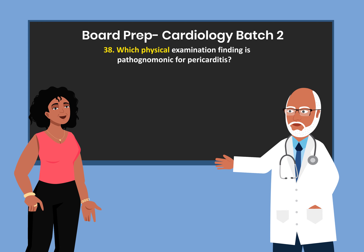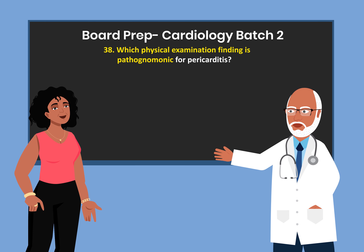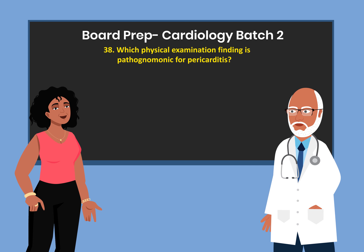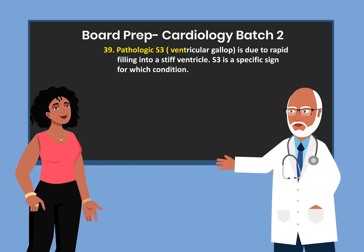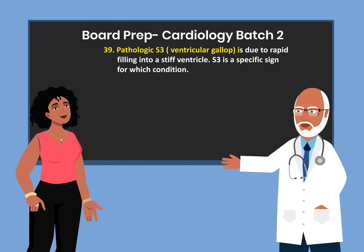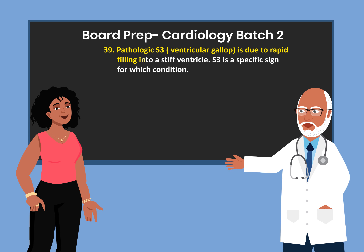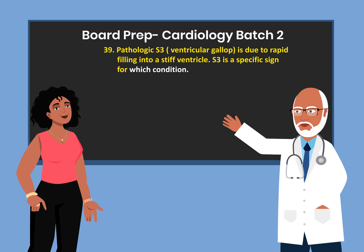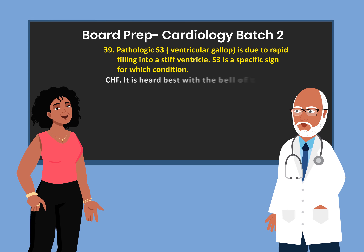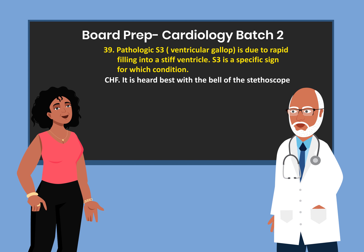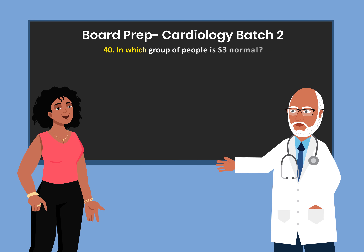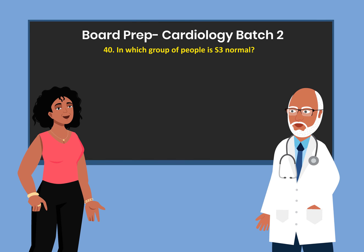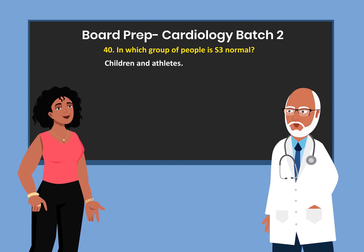Which physical examination finding is pathognomonic for pericarditis? A pericardial friction rub. S3 is due to rapid filling into a stiff ventricle. S3 is a specific sign for congestive heart failure. It is heard best with the bell of the stethoscope. In which group of people is S3 normal? Children and athletes.